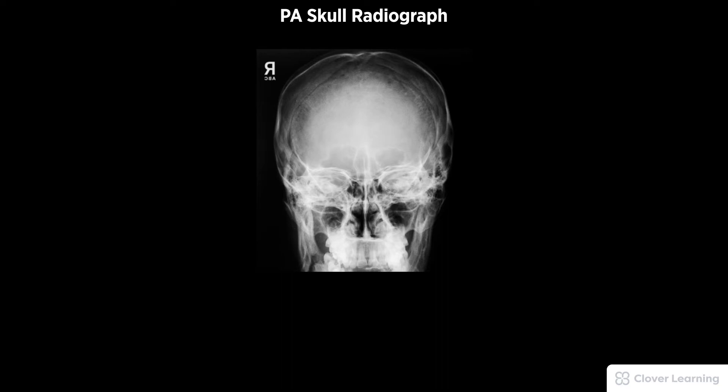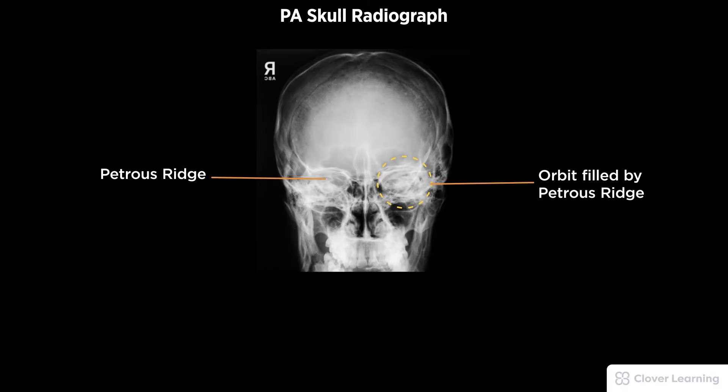A diagnostic PA skull radiograph must be free of motion and rotation. Demonstrated anatomy includes symmetric petrous ridges, orbits filled by petrous ridges, with proper visualization of soft tissue and bony detail.